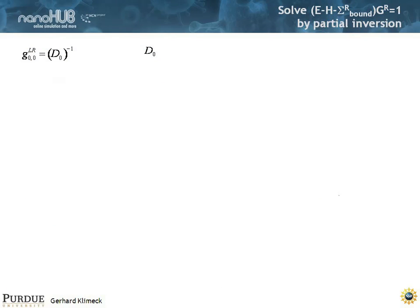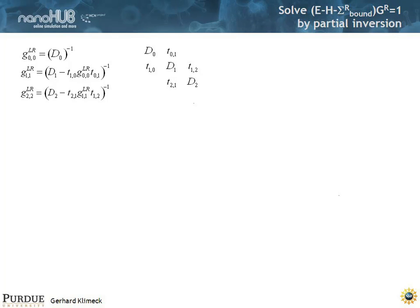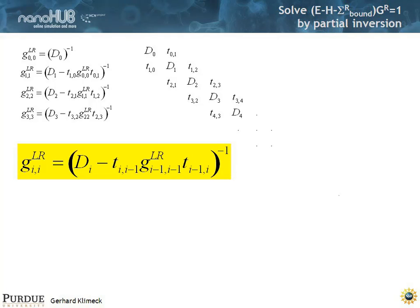We have a G^r that's only connected to the semi-infinite lead going to the left. We say that G^r is connected with some t's to the next matrix element. We can compute it with this RGF algorithm, where we can get the G that's now connected to the semi-infinite lead to the left plus one matrix element by this expression. Then we can expand this Hamiltonian further and make it a little bigger — we can get G connected to the semi-infinite lead up to site 2, then site 3, then site 4, and obviously you can generalize that.